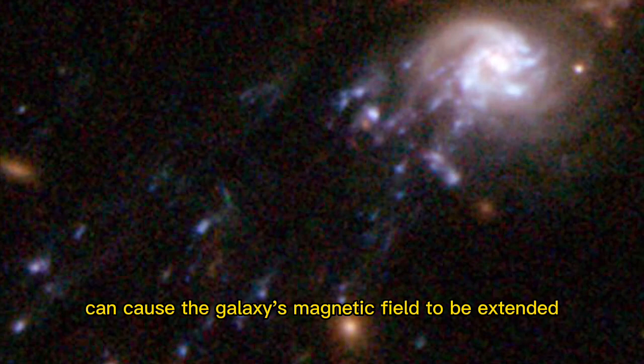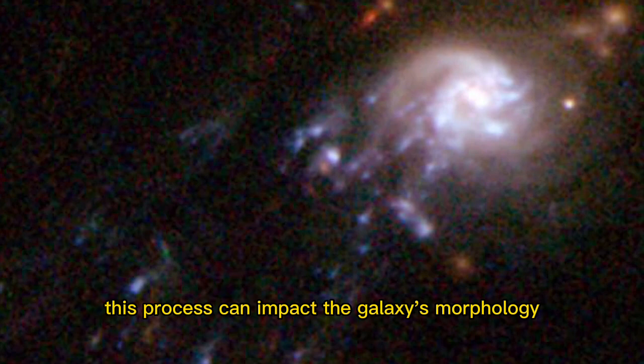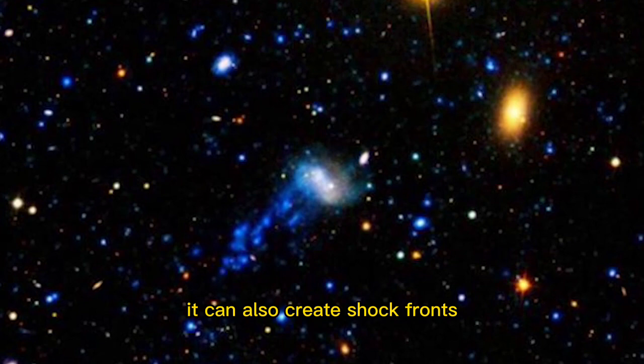The stripping process can cause the galaxy's magnetic field to be extended into the tail of gas and dust. This process can impact the galaxy's morphology, resulting in a more irregular, more lopsided appearance.